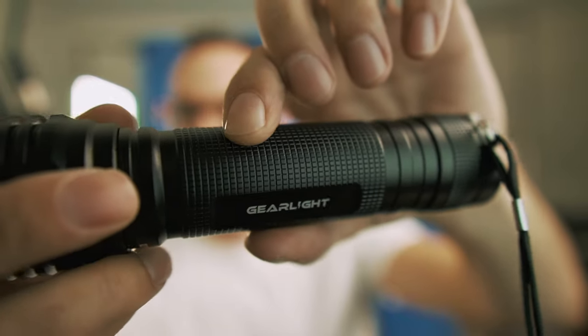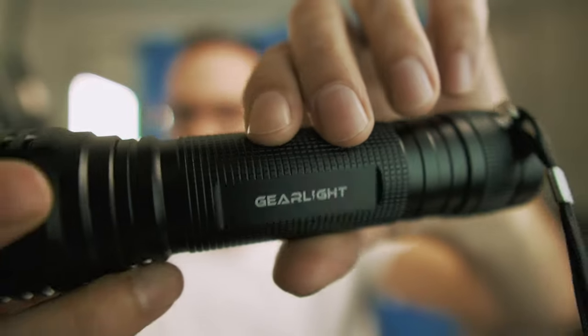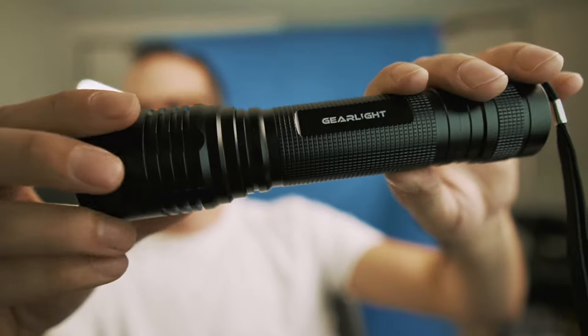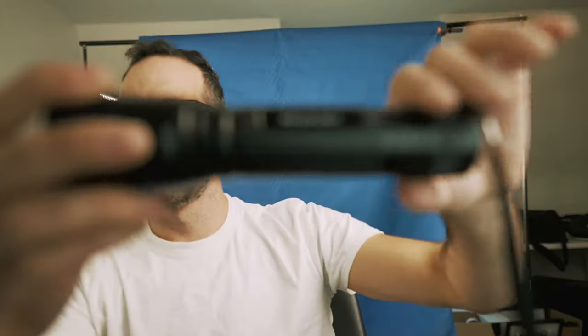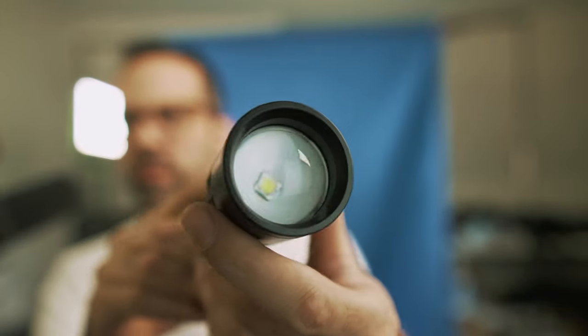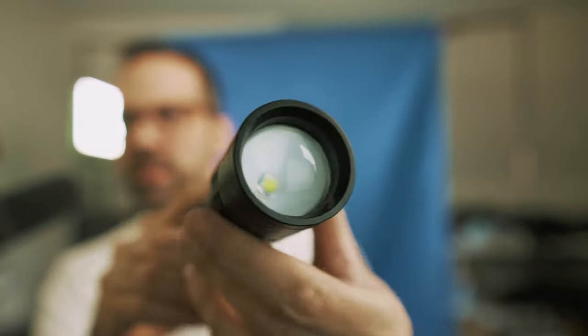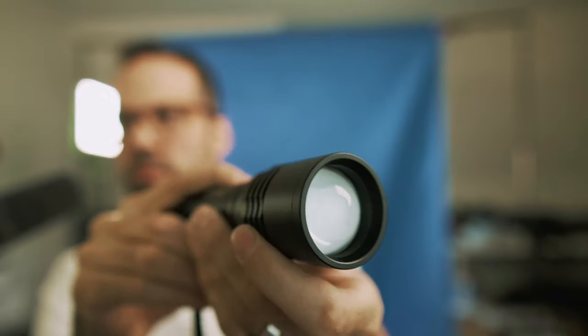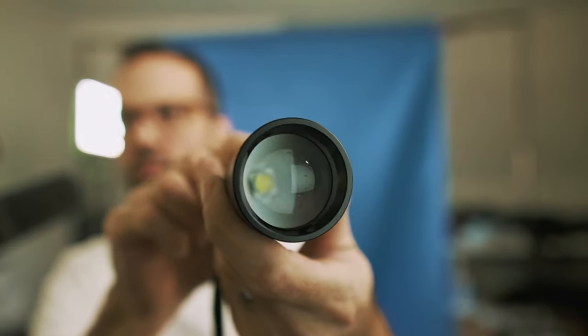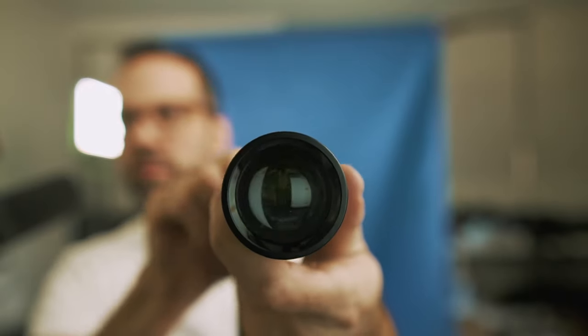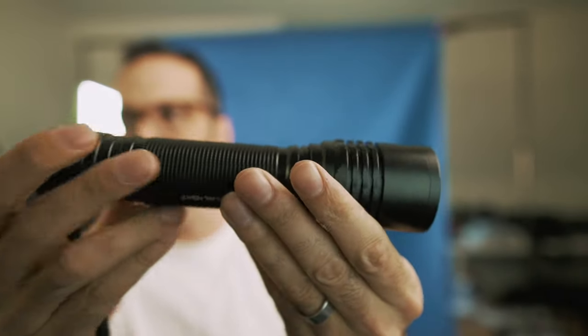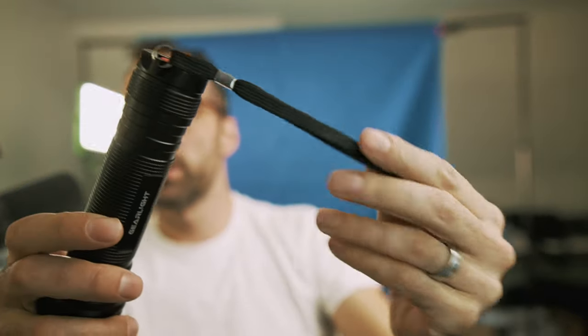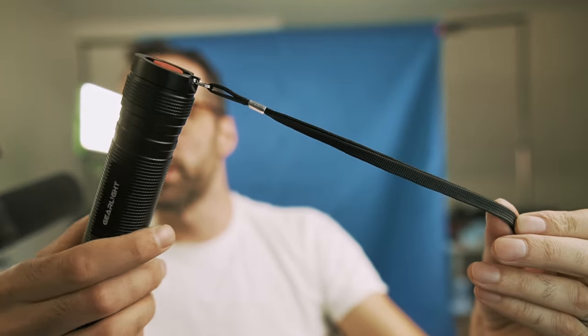The body does have this square grid pattern cut into it so that's going to help with grip. It's about an inch and three-eighths diameter body right here. This is the front of the flashlight—you can see the glass lens here that helps focus the beam of light. As you pull that out it focuses that LED element to focus the beam, and it does include a small lanyard as well.